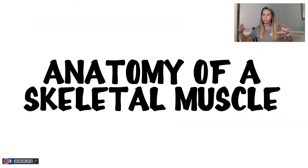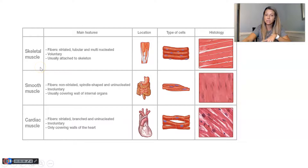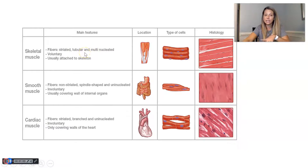When I say skeletal muscle, remember there are three types of muscle tissues — we learned this when we did our histology unit. There's skeletal muscle, which is what we're looking at today, smooth muscle, and cardiac muscle. Skeletal muscles are striated, they are multinucleate cells, they are voluntary.